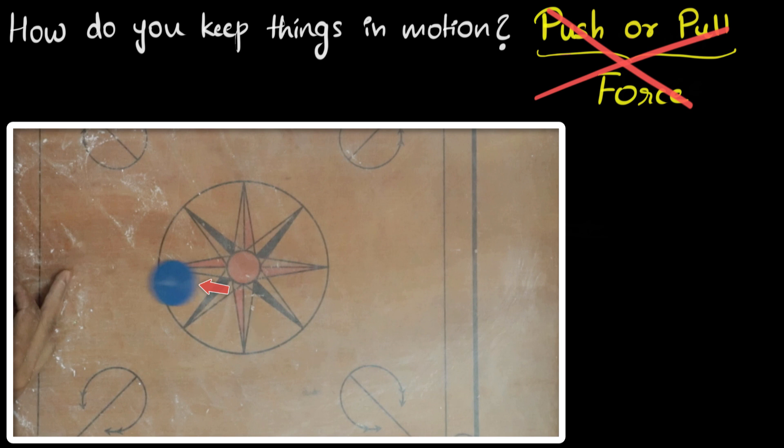And since the friction decreases, the opposing force decreases, this means now it is harder to stop the coin. And as a result, the coin travels farther before coming to a stop.